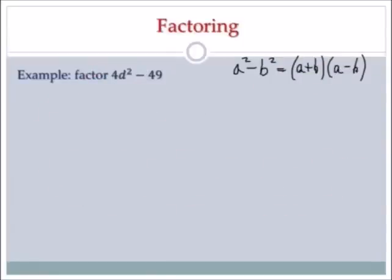Hi, it's me, Mr. B. Let's factor 4d squared minus 49 using the difference of two squares. This is a little different because instead of just a 1 as a coefficient on the squared term, there's a 4. So we treat it a little differently but still apply the formula. a is what I square to get 4d squared — I can cut it into chunks: what I square to get 4 is 2, and what I square to get d squared is d. So a is 2d. b is what I square to get 49, which is 7.